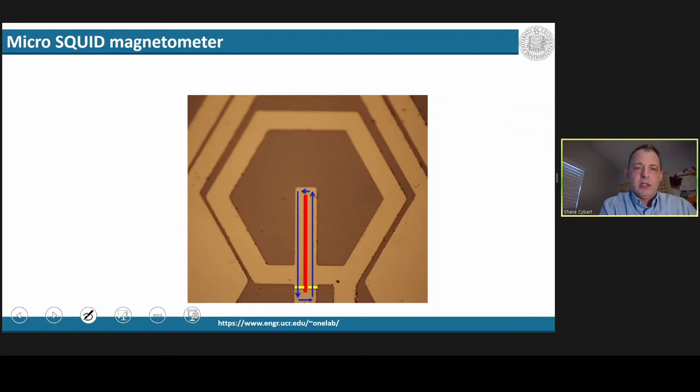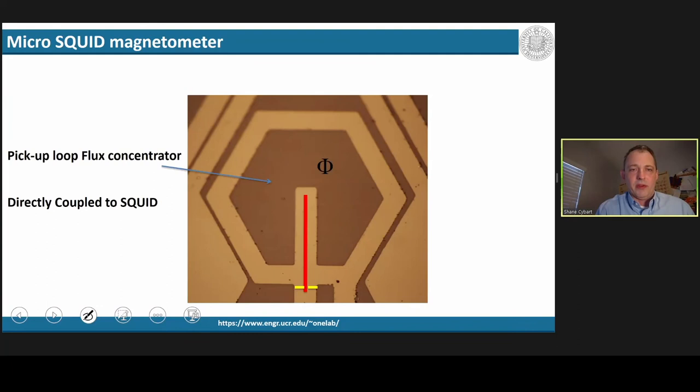However, this other loop that we put in called the flux concentrator, if there's a flux that goes through it, it creates a circulating current which is forced to go around the squid because of the resistance of the junctions. And this is called a directly coupled magnetometer.